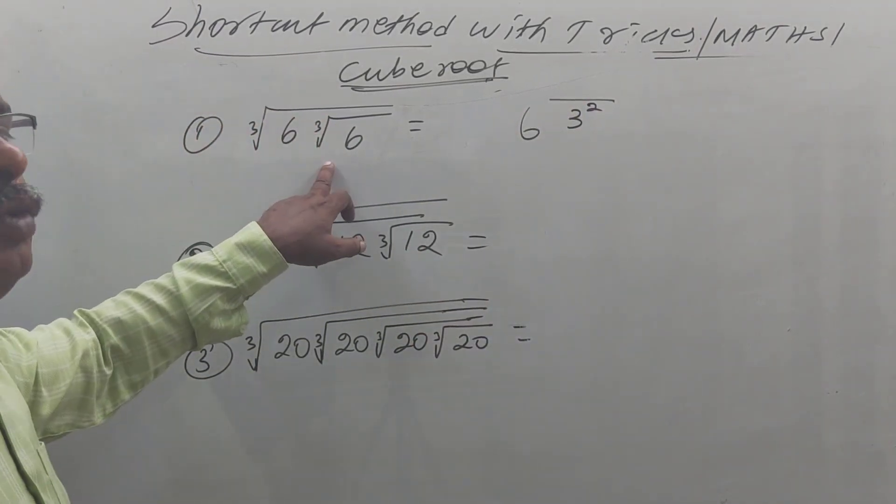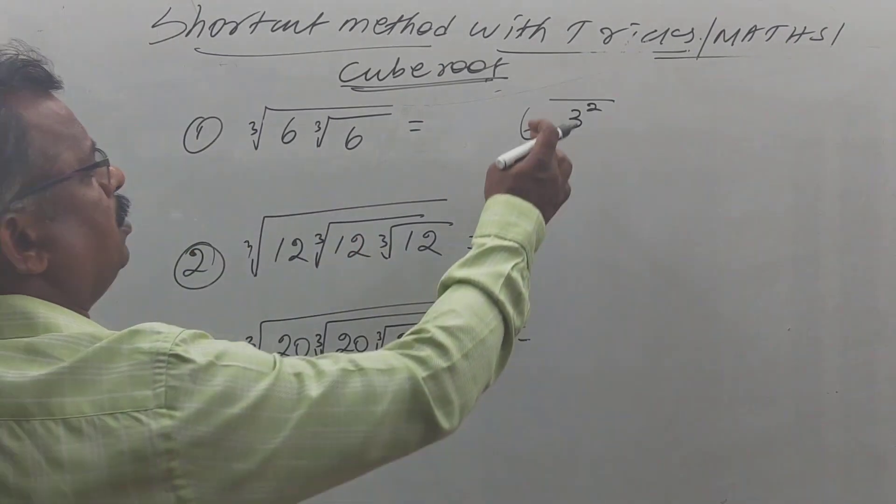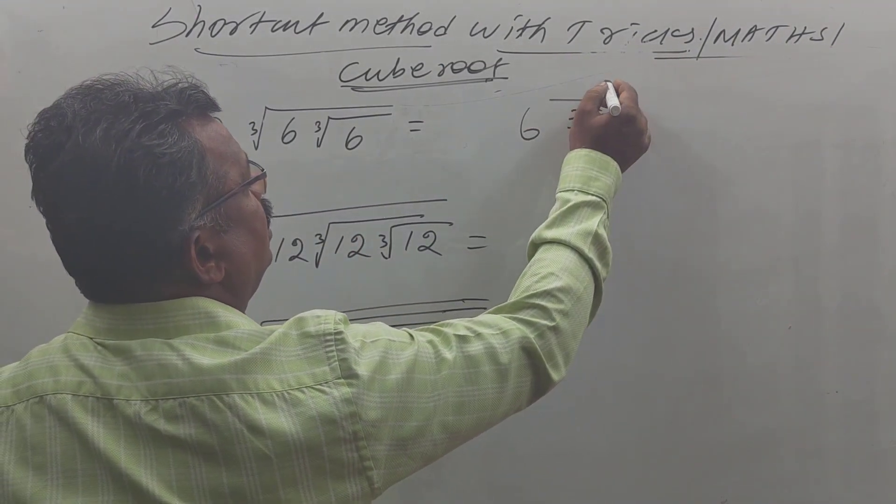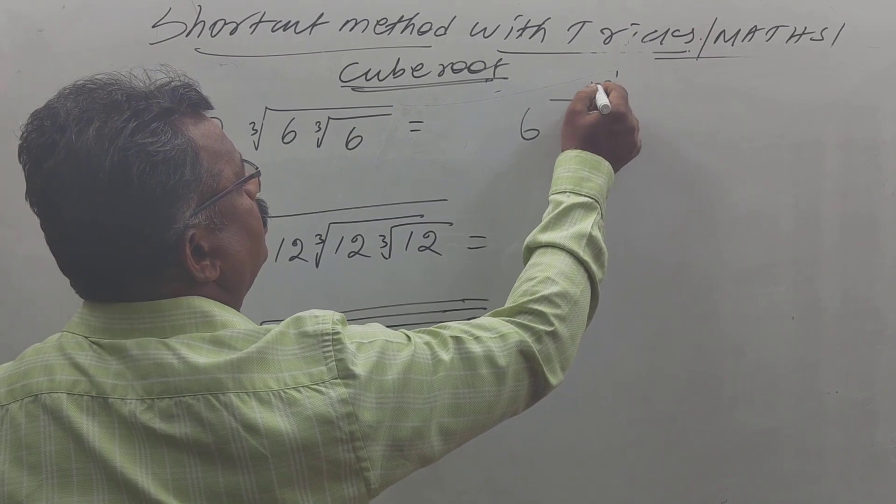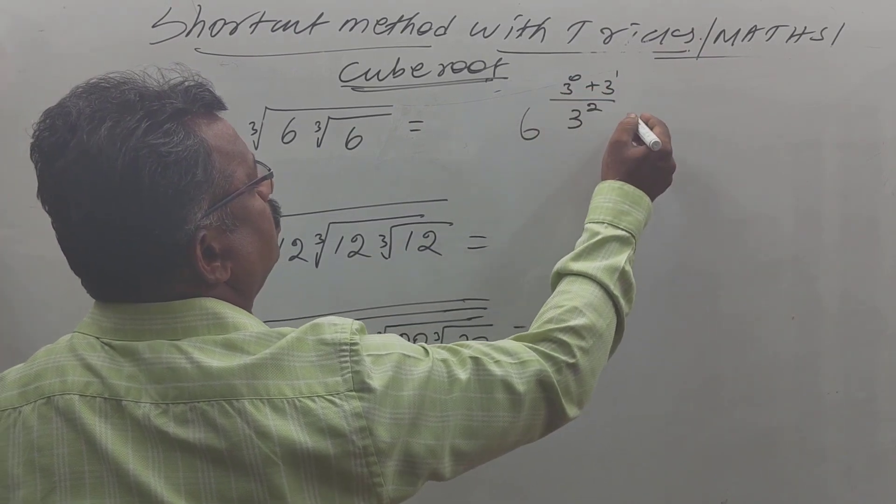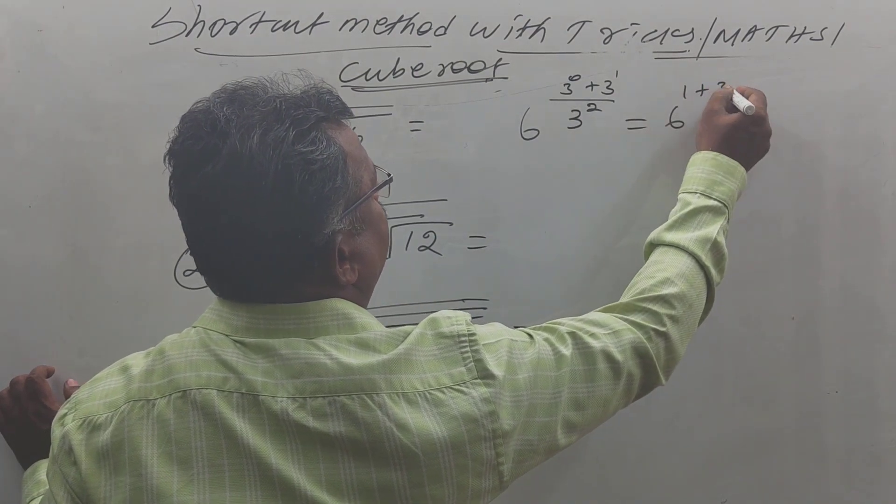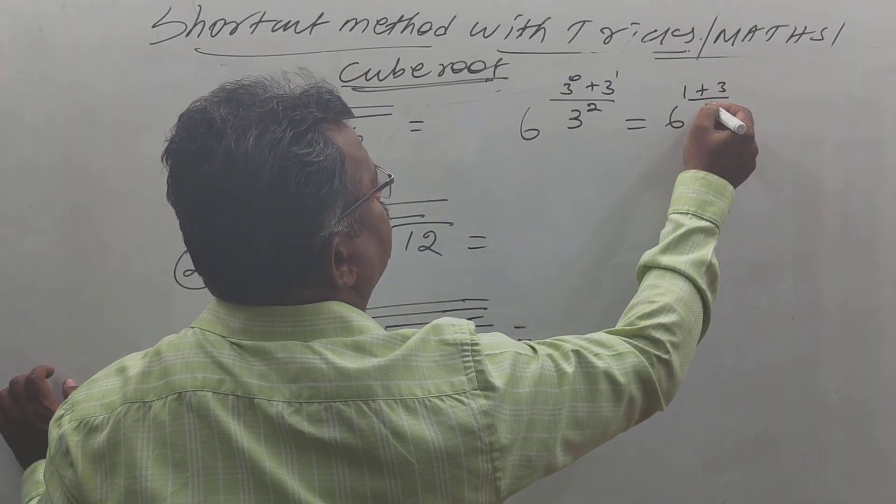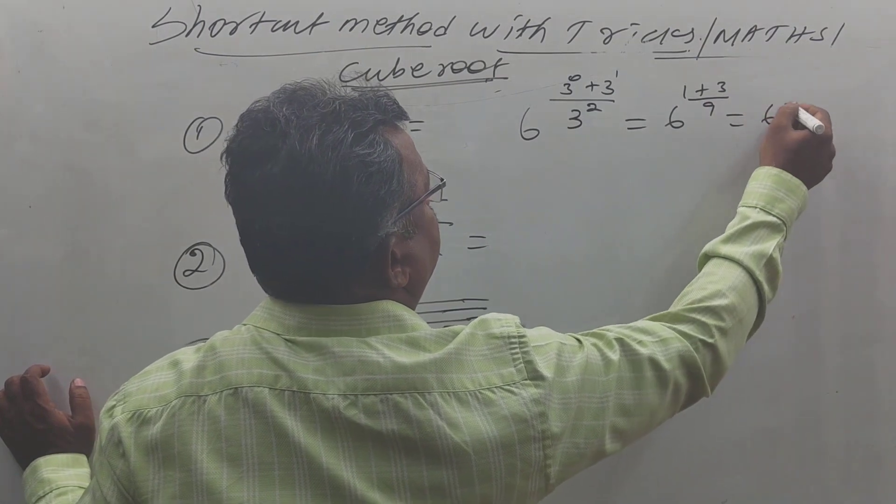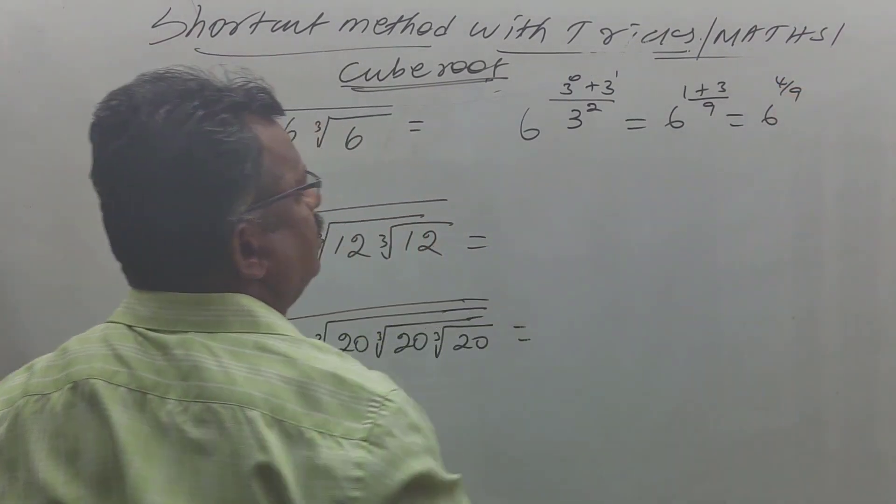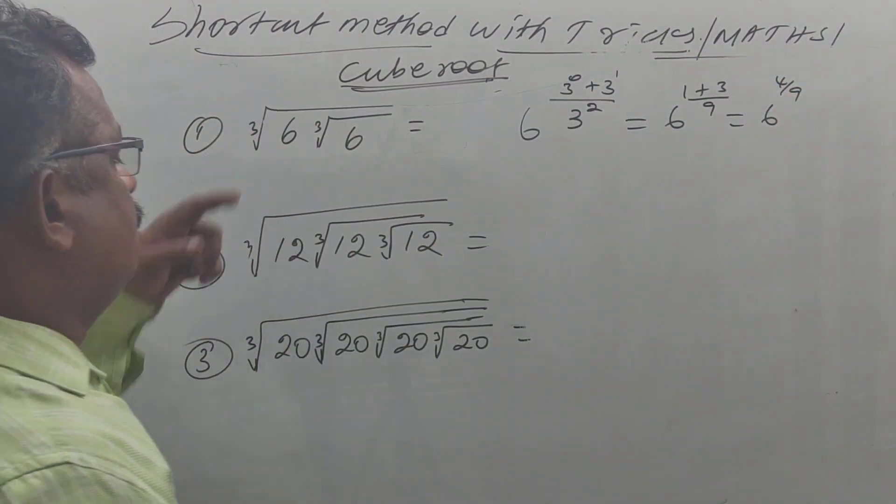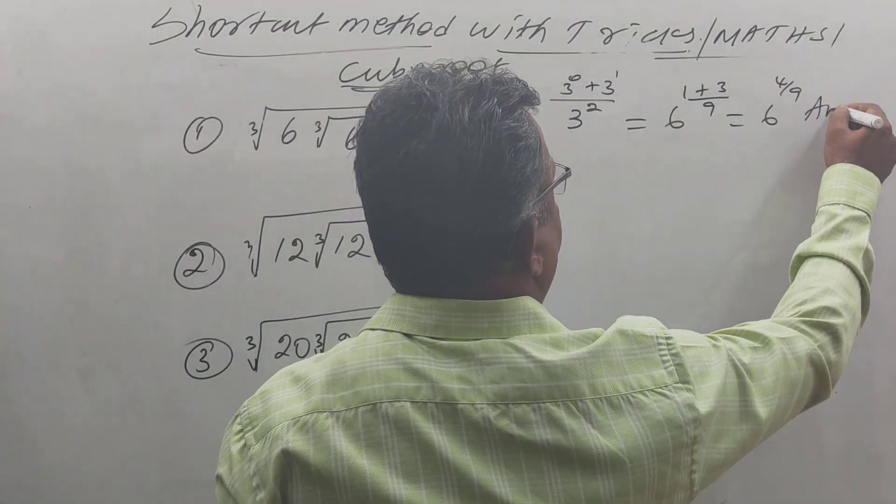How many cube roots? Only two cube roots. So 3 power 2. Then here, 3 power 1 plus 3 power 0. 3 power 0 is 1. 3 power 1 is 3, divided by 3 squared is 9. So 6 power 4 by 9 is the answer.